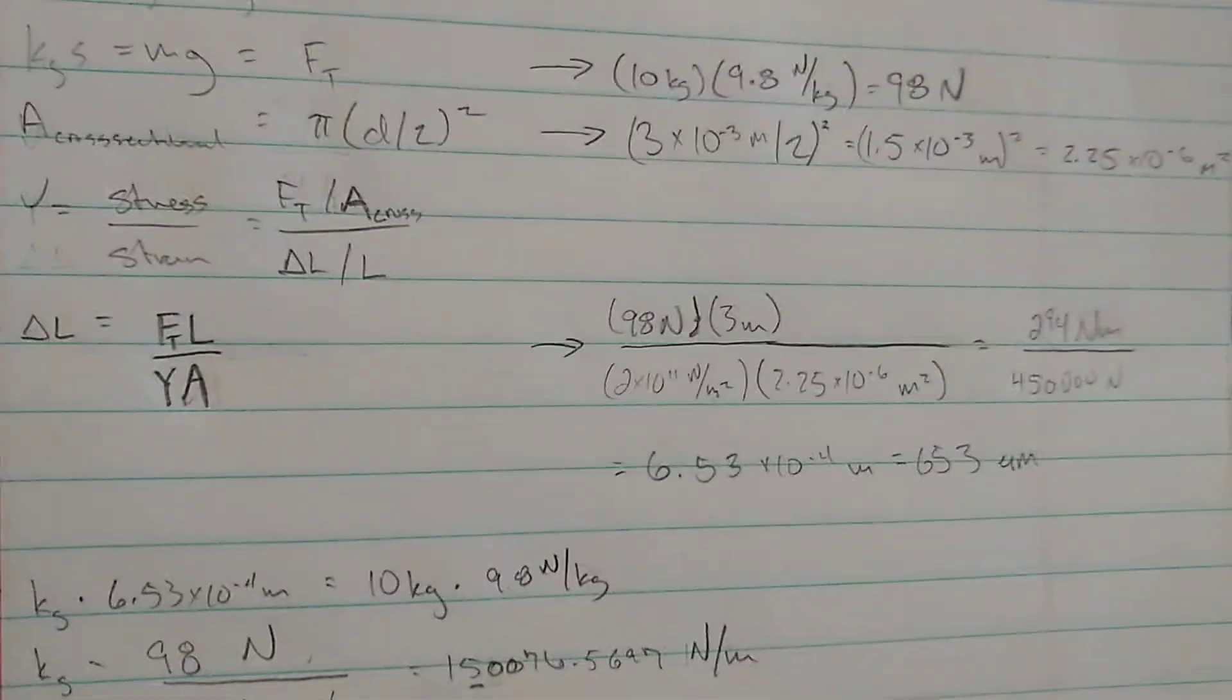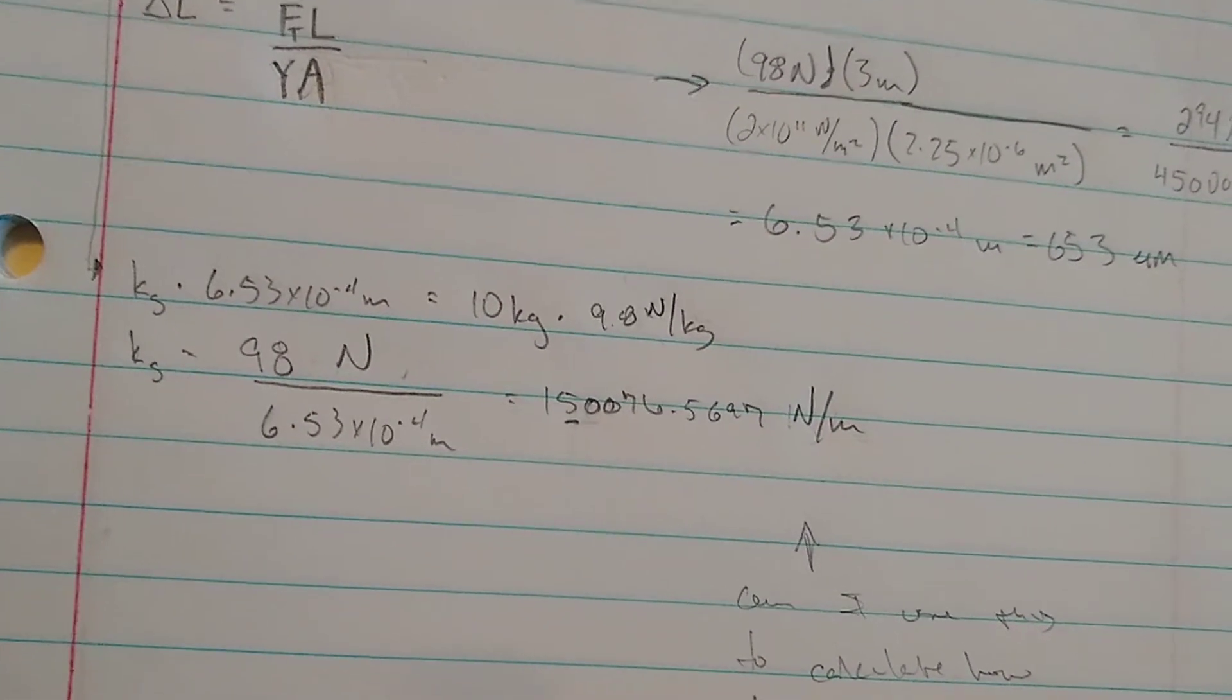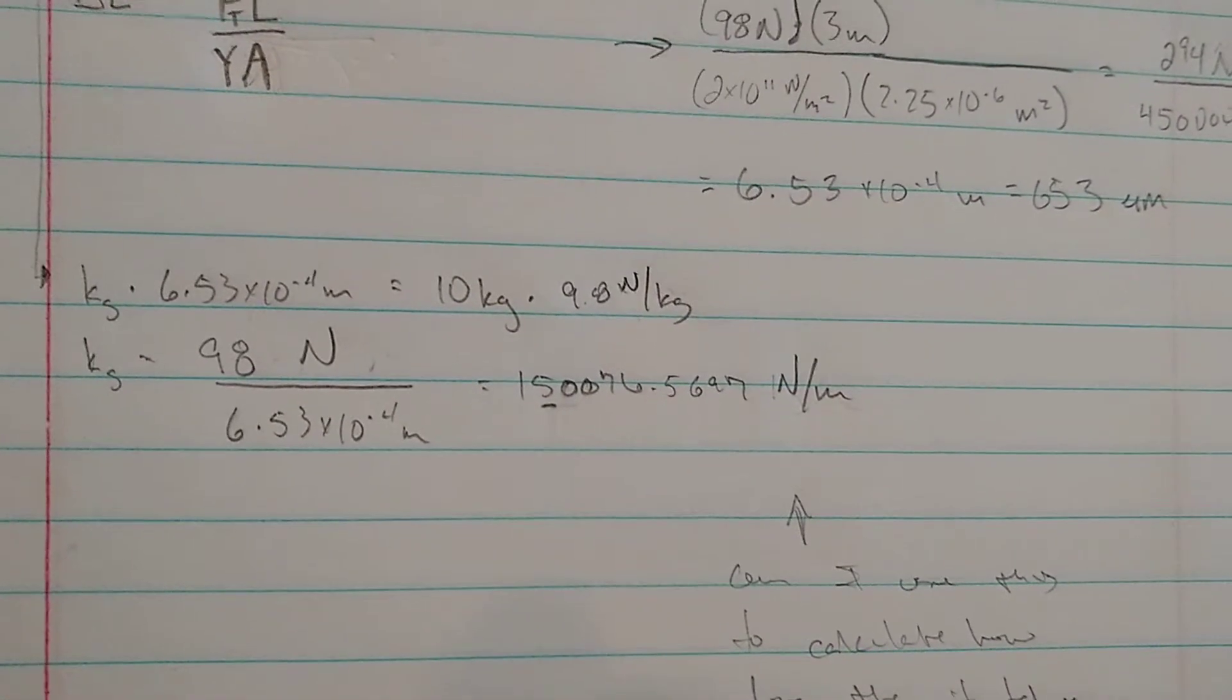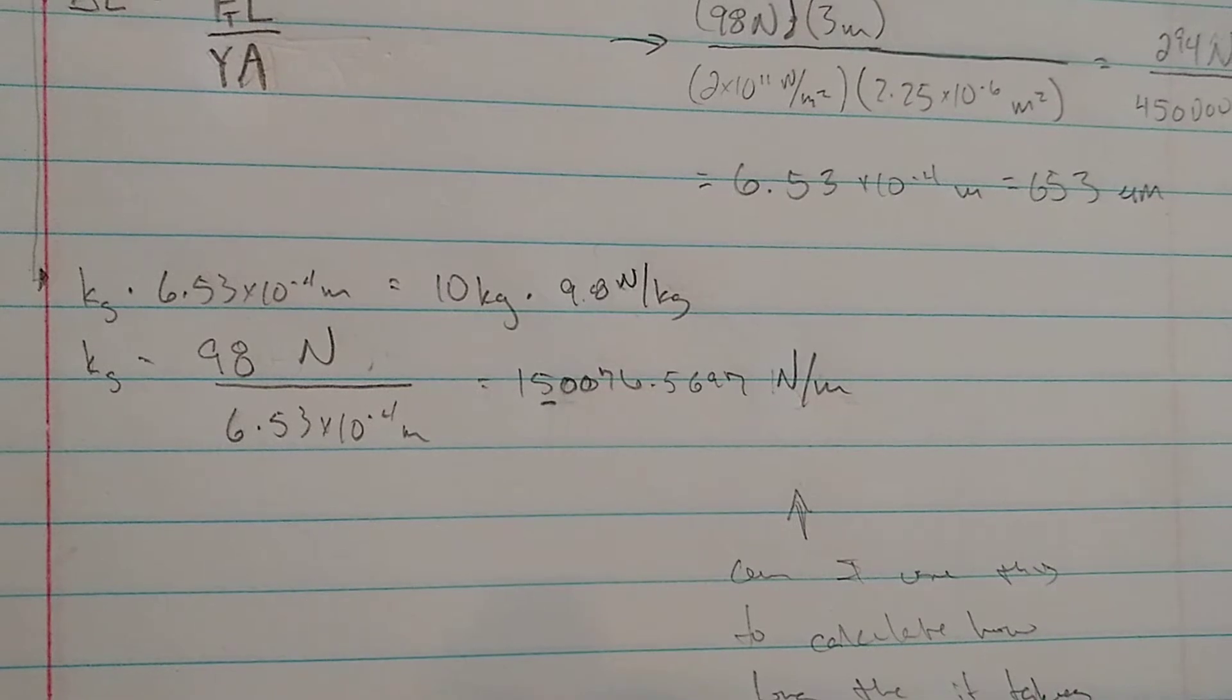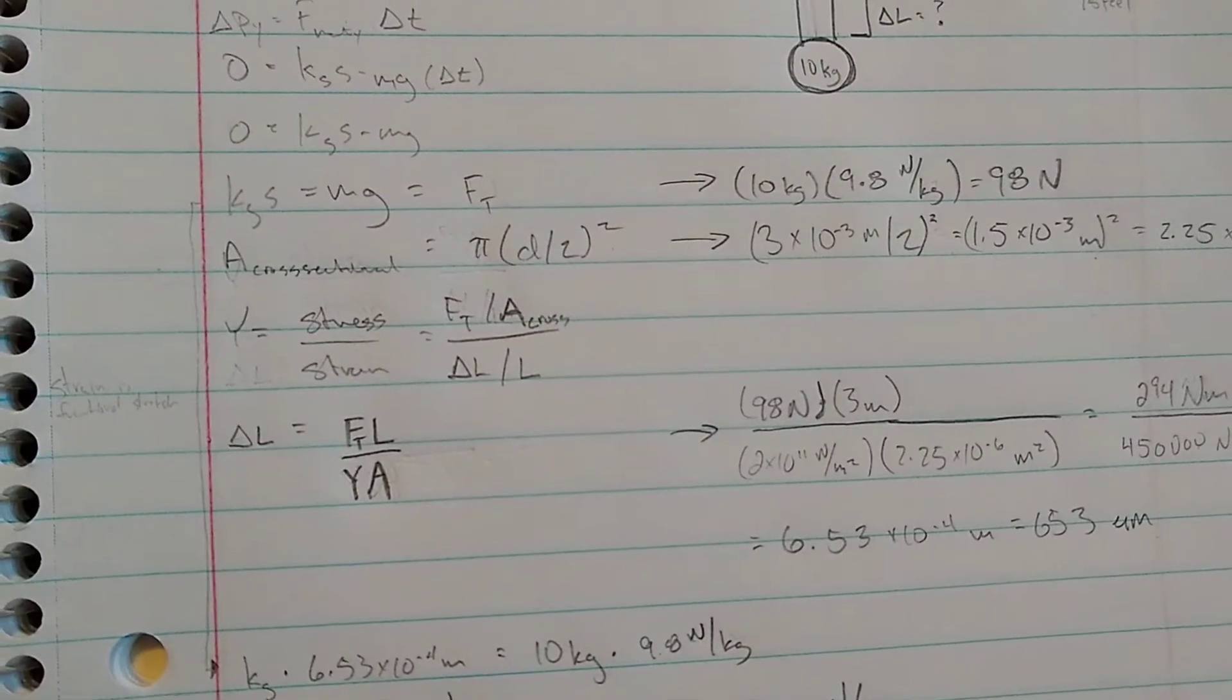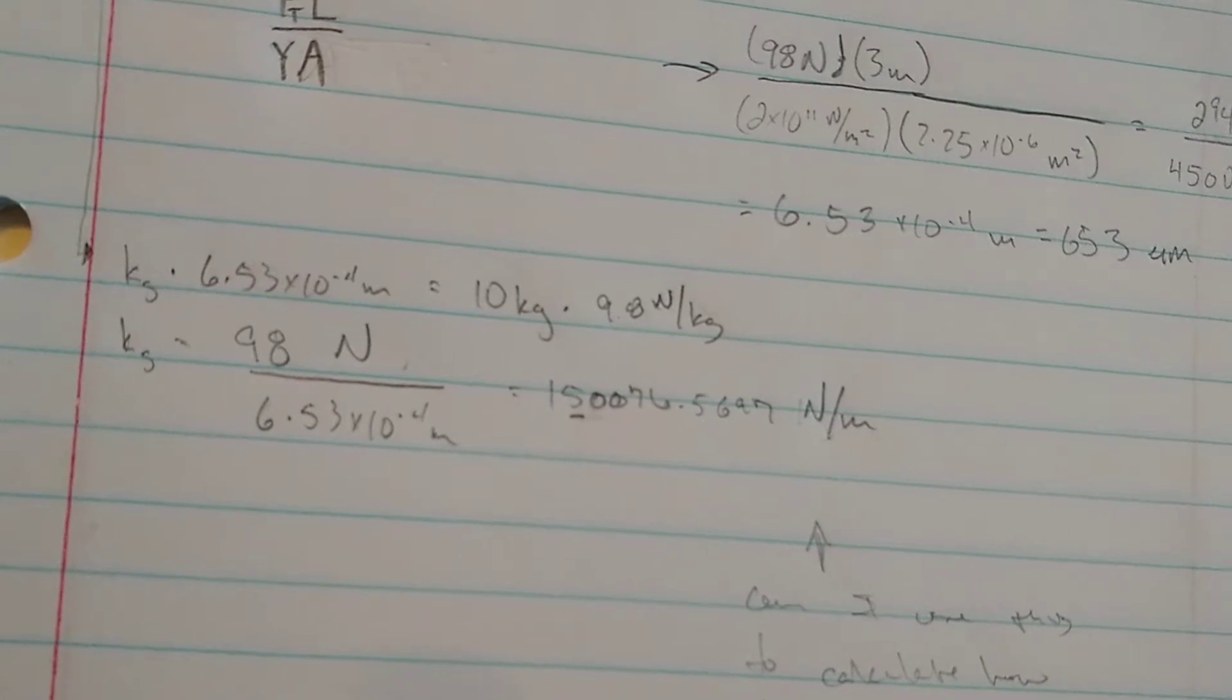And that is what the problem originally asked. But since we have delta L, and we can treat it as a stretch, we can find the spring constant of a steel wire by taking this formula that we had come up with earlier due to the momentum principle.